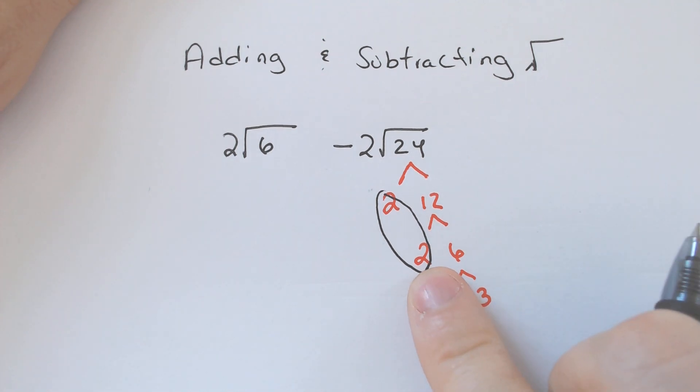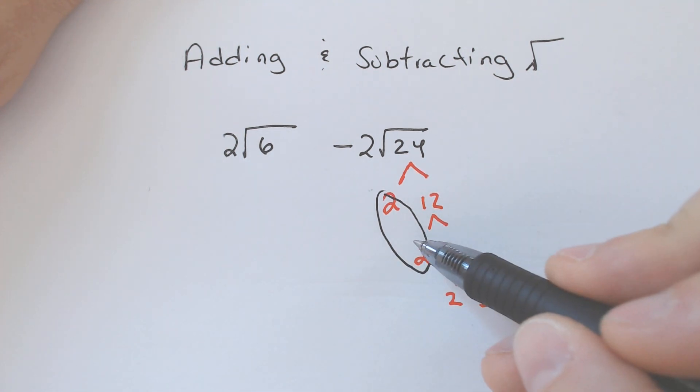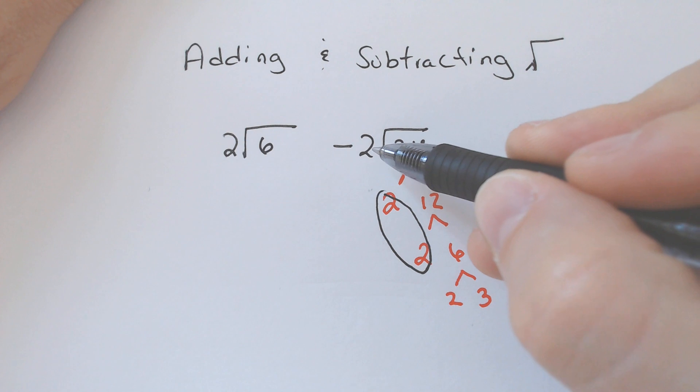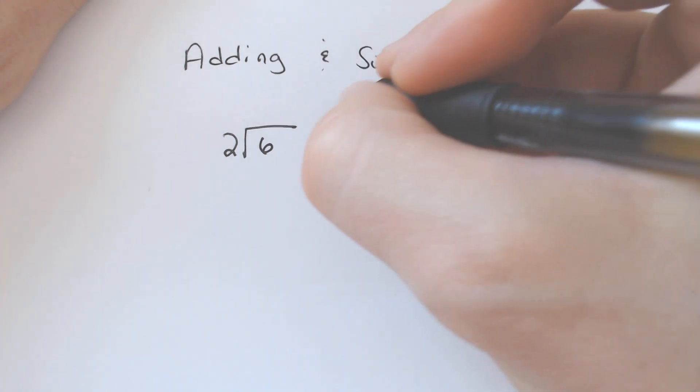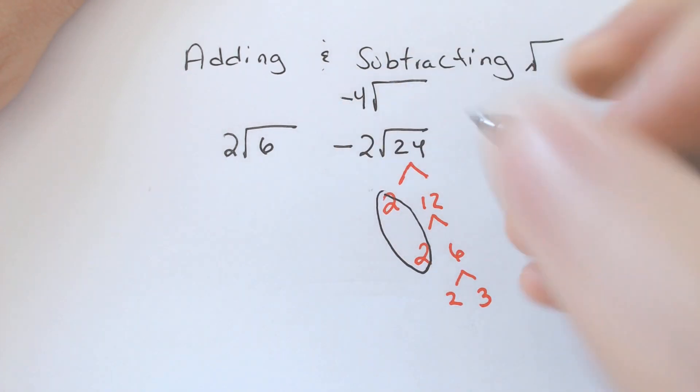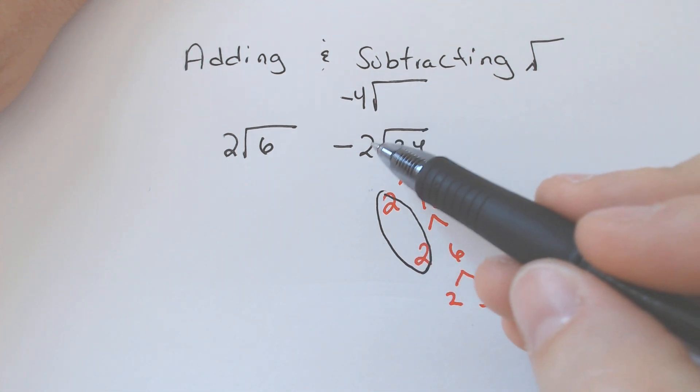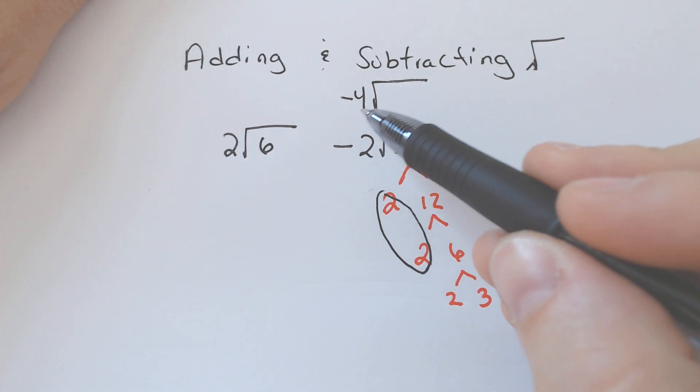That 2 is going to go on the outside of the radical, and it will multiply by whatever is under there already. So this 2 is going to multiply with this 2 to make negative 4. So the 2 we circled multiplied with the negative 2 on the outside to get negative 4.